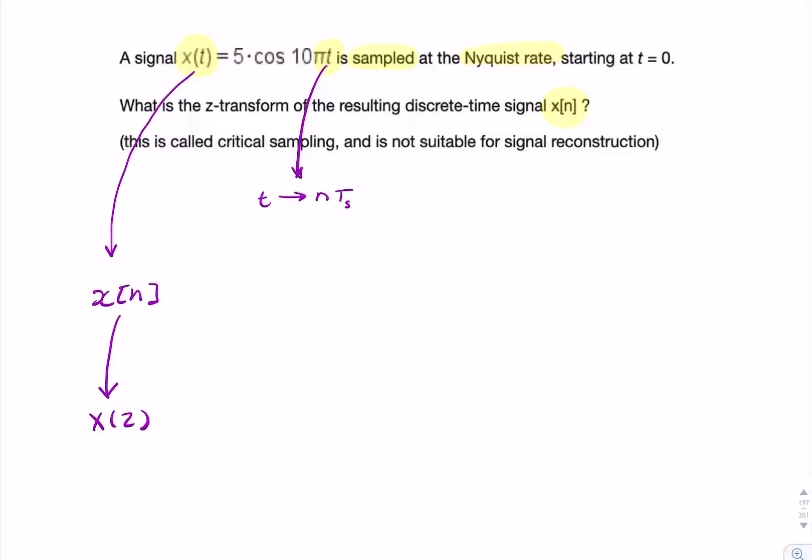Now we're told it's sampled at the Nyquist rate, so that tells us that the sampling rate is twice f_max. And f_max we can get from omega, from the frequency of the cosine, so f_max is 10π over 2π, so that's basically omega over 2π.